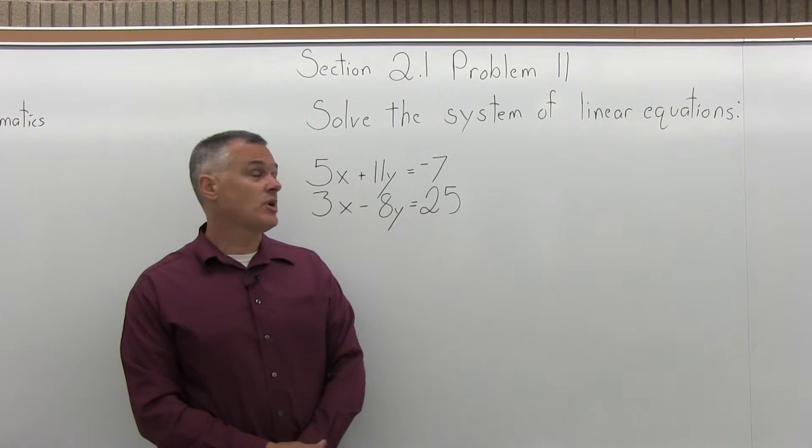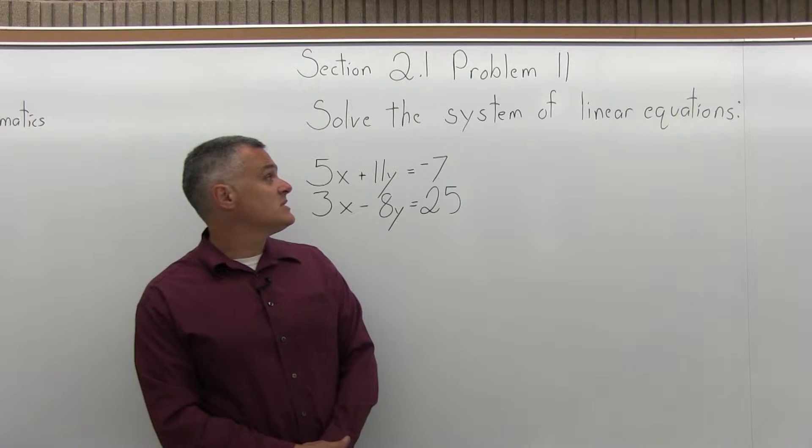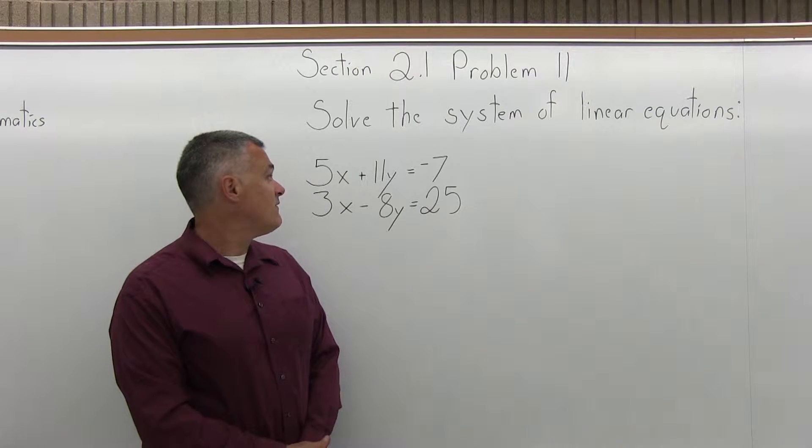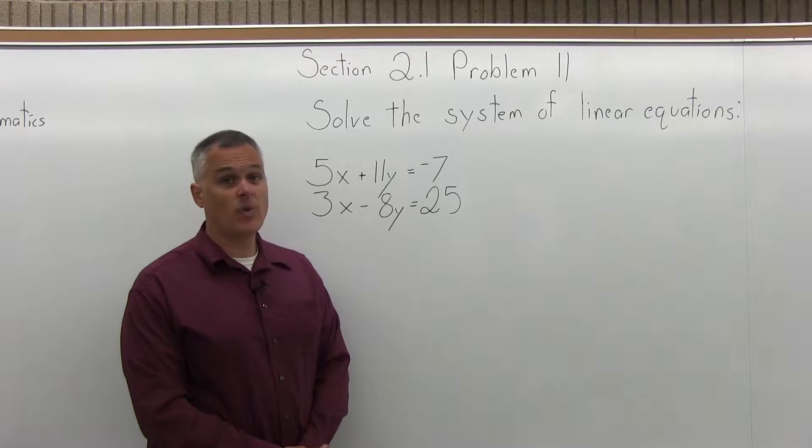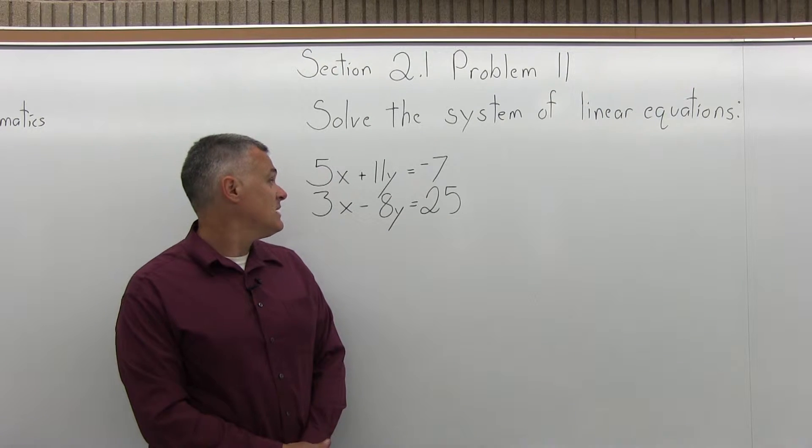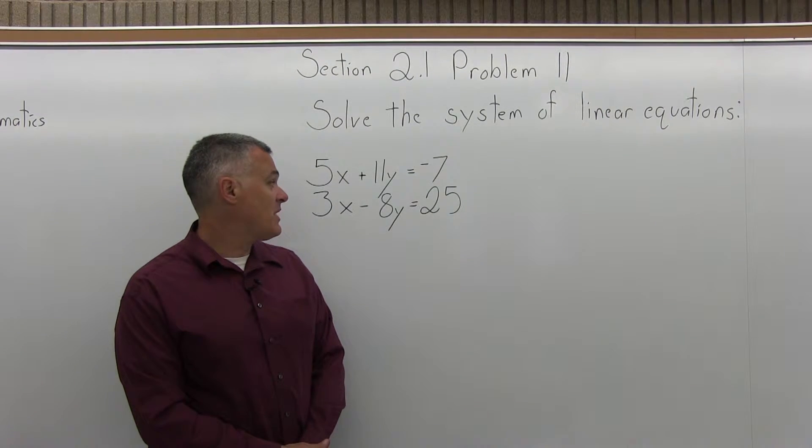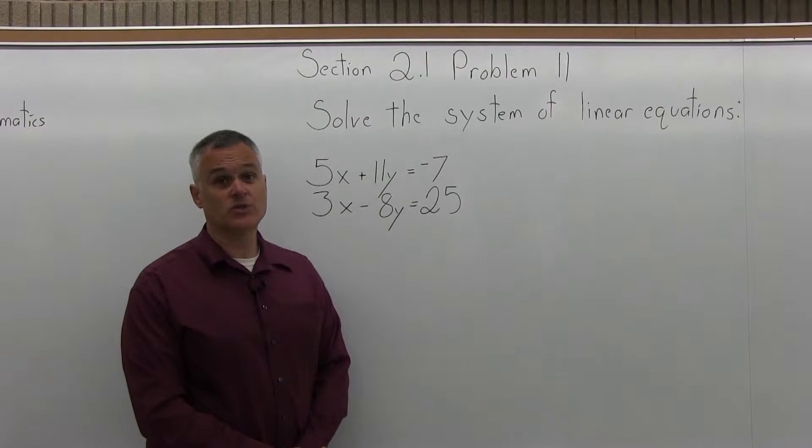This is Problem 11 from Section 2.1. Solve the system of linear equations: 5x plus 11y equals negative 7, and 3x minus 8y equals 25.